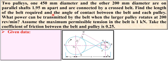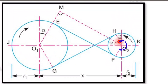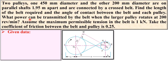Find the length of the belt required and the angle of contact between the belt and each pulley. Also find what power can be transmitted by the belt when the larger pulley rotates at 200 rpm. Assume the maximum permissible tension in the belt is 1 kN.